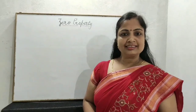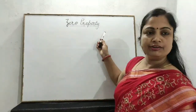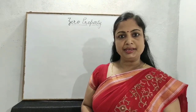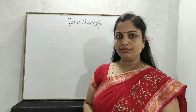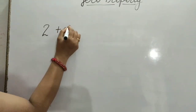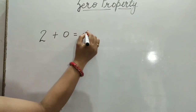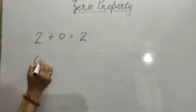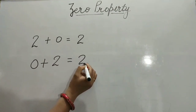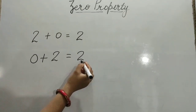The next property is the zero property of addition, which says that if we add 0 to any number, or any number added to 0, the result remains the same. For example, 2 plus 0 is equal to 2. 0 plus 2 is equal to 2. The result is the same.